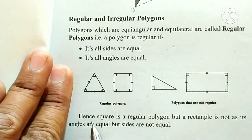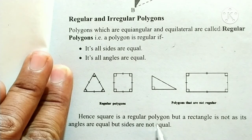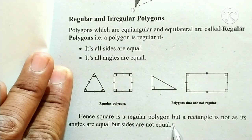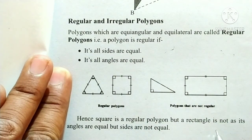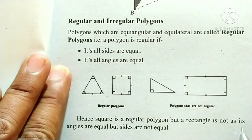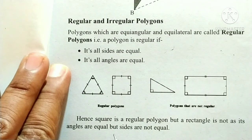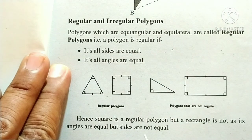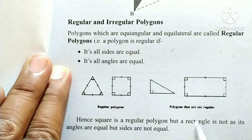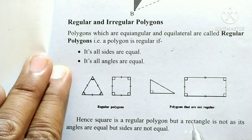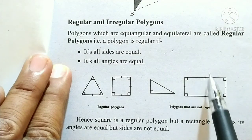A square is a regular polygon, but a rectangle is not a regular polygon because although its angles are equal, its sides are not all equal.